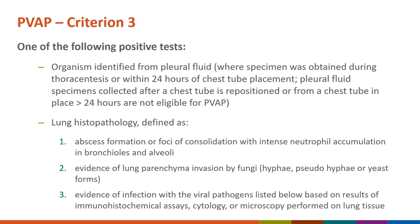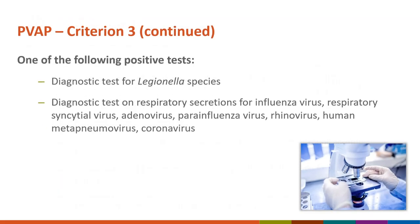PVAP criterion three can be met by one of the following positive results: pleural fluid culture when obtained as described; non-culture-based testing methods, or lung histopathology results indicating abscess formation, evidence of pulmonary invasion, or infection with a viral pathogen; a diagnostic test for Legionella species; or a diagnostic test on respiratory secretions positive for influenza, RSV, adenovirus, parainfluenza virus, rhinovirus, human metapneumovirus, or coronavirus.